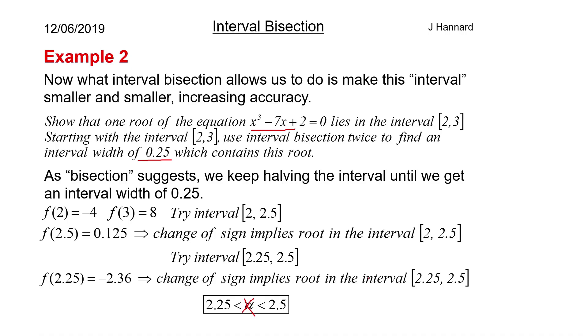So all you know about x is that it's in between the interval [2.25, 2.5]. And it could say we want a width of 0.125. You get the idea. You have to keep halving it until you get what the examiner wants. But that is interval bisection. It's a whistle stop tour of it. There's not much more to it. You need to know change of sign and you need to know interval bisection.